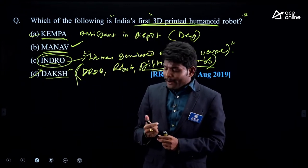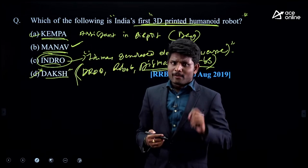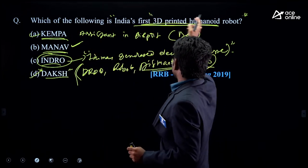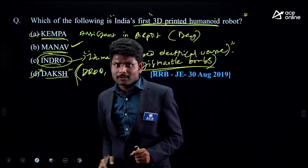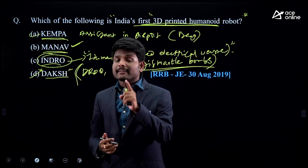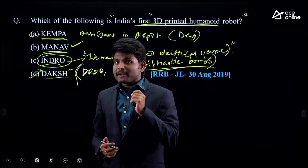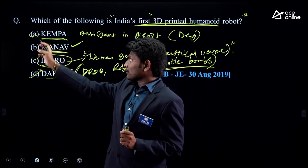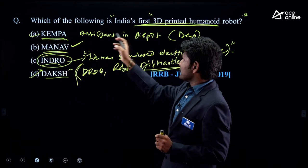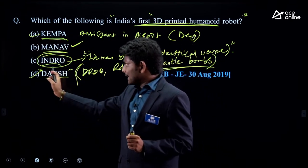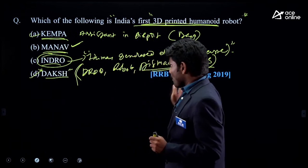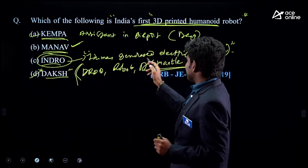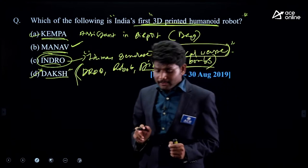While solving this question, there are two ways. One: just search for the 3D printed humanoid robot in Google and find MANU. But that doesn't help your preparation. The better approach: check all the options. Kempa works in airports; Daksh can dismantle bombs; Indra is designed from electrical waste. Got the point?